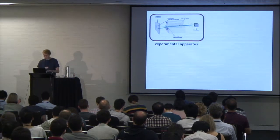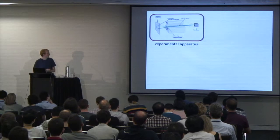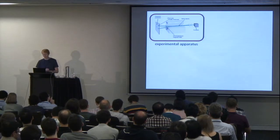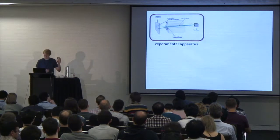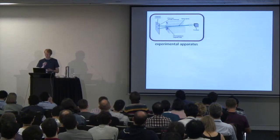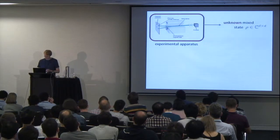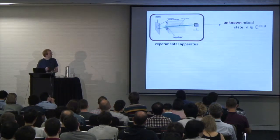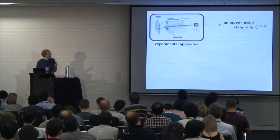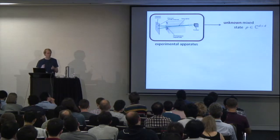Let me tell you about the general problems we're looking at in this paper. Suppose you have some sort of experimental apparatus — it's pictured there — and maybe it has a button on top. Whenever you press this button, it outputs some mixed state. This mixed state, its name is rho. You represent it as a matrix, and in this talk I'll be using lowercase d for the dimension of this matrix.